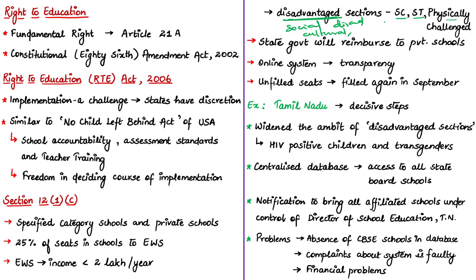These are well-crafted definitions but how far they are implemented is a totally different picture. When private schools give admission under this 25% quota under Section 12.1C, the state governments will reimburse the schools for the costs borne in allocating these seats on a timely basis, with the amount determined by the appropriate state government's rules. One significant improvement in governance is that the admission system has now been made online, which has led to transparency in many states.